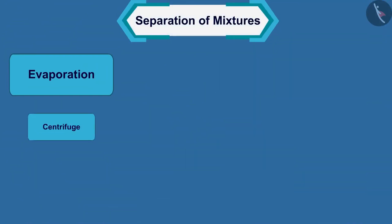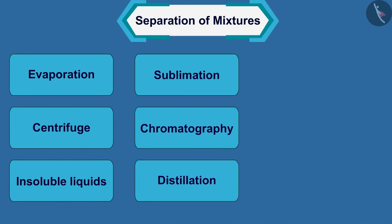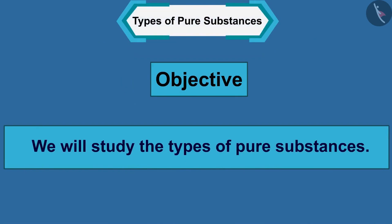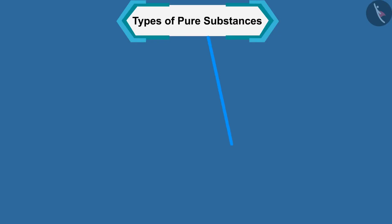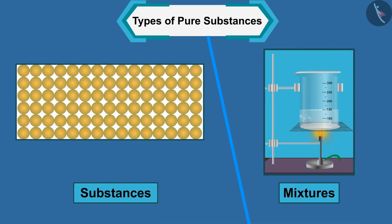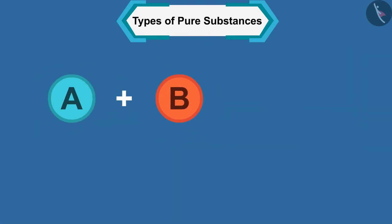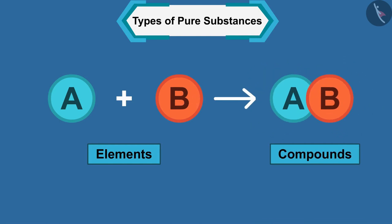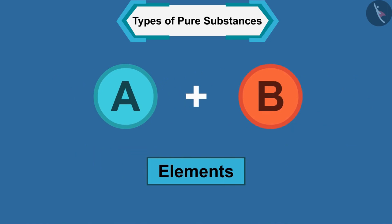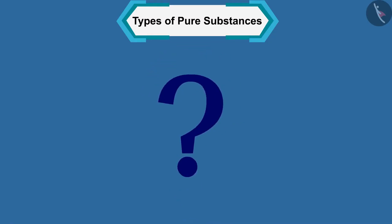In the previous video we studied about the separation of mixtures. In this video we will study the types of pure substances. So far we have studied substances and mixtures, but we can classify substances according to their chemical composition into elements or compounds. Let us first learn about elements.